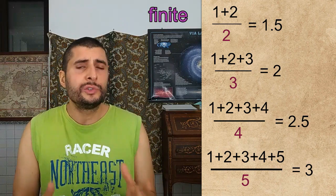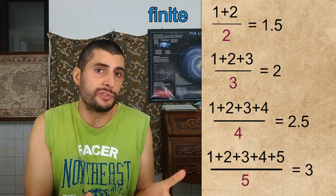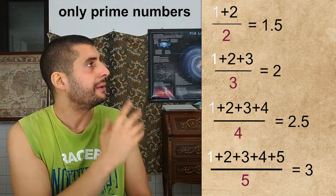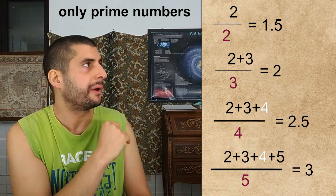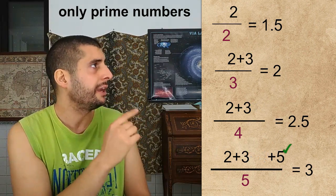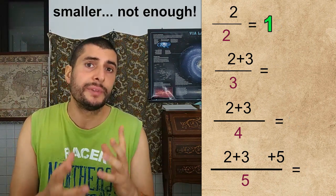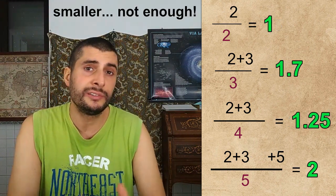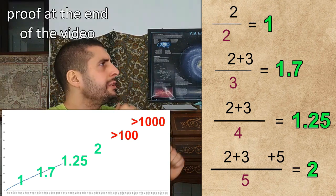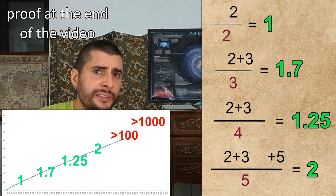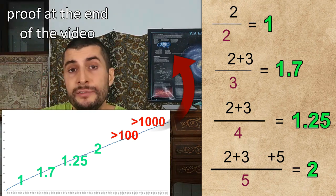Now, we needed to make the average finite, so we could try to use only prime numbers. 1 is not a prime, Silja. 2 — ok. 3 — ok. 4 — not a prime, Silja. 5 — ok. 6 — not a prime. Awesome! Now the values are smaller. Unfortunately, that's not enough — this is still divergent. It will eventually be greater than 100, than 1000, and by the end it will be infinite.